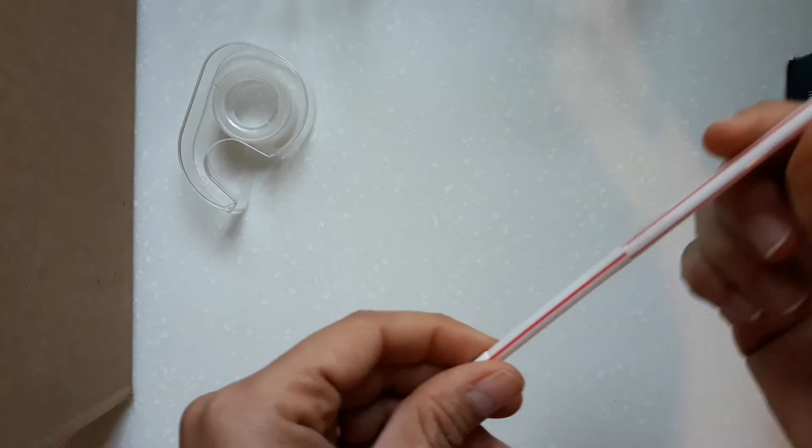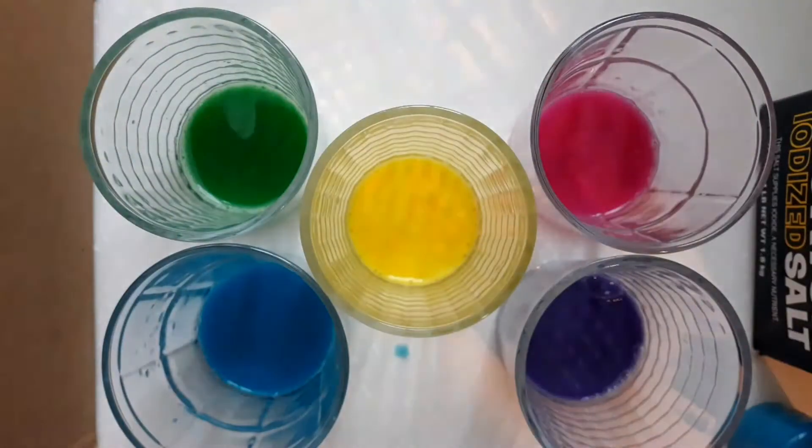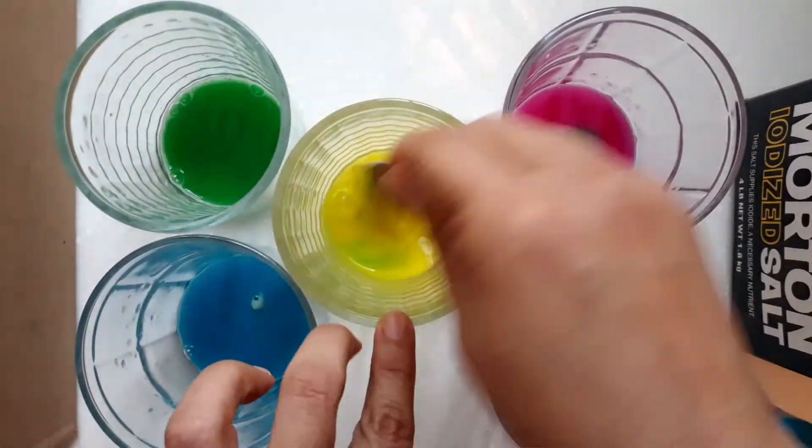Next you will mix the paint or the food coloring with water and some dishwashing liquid.